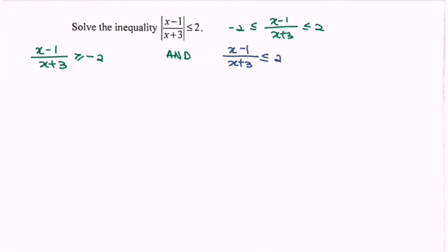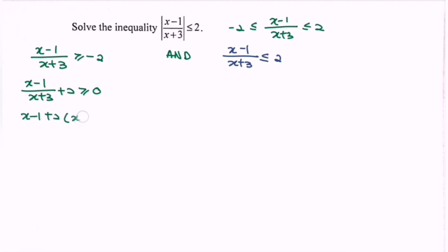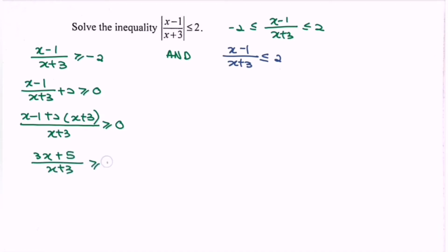Focus on the left hand side. Step number 1: transfer the negative 2 to the left hand side so that the right hand side equals 0. So we have x minus 1 over x plus 3 plus 2 greater than or equals to 0. Next, equate the denominator: x minus 1 plus 2 multiplied with x plus 3, over x plus 3, greater than or equals to 0. Expanding and simplifying gives us 3x plus 5 over x plus 3 greater than or equals to 0.